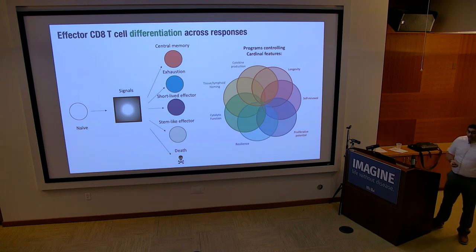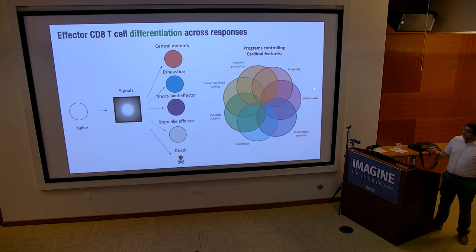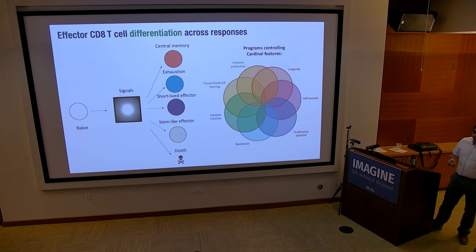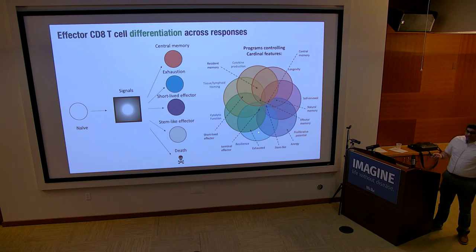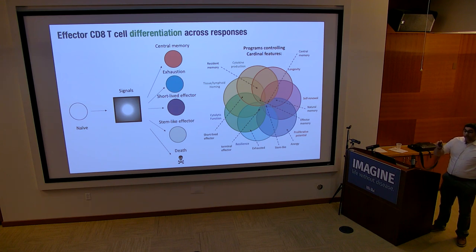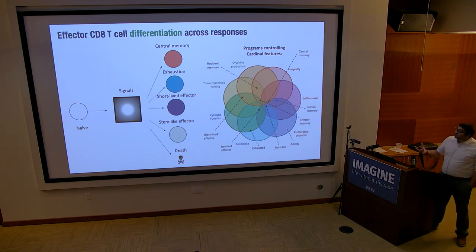The way we think about how to relate all the different cell subsets is this idea that there are a number of cardinal features that CD8 T cells especially can have: longevity, self-renewal, proliferative potential, resilience to repeated antigen challenge, cytolytic function, ability to home or stay within a tissue, and cytokine production. T cell subsets are really mix-and-matches of these features. A central memory cell might have longevity, self-renewal, and high proliferative potential, but not be very resilient to repeated antigen challenge. An exhausted cell may have some cytolytic function and resilience but be a poor responder in terms of proliferative capacity.